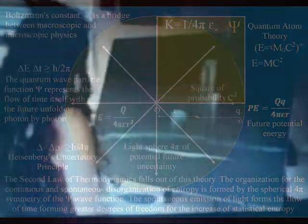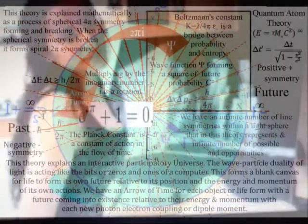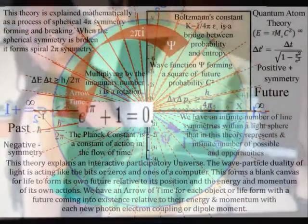The wave-particle duality of light is acting like the bits, or zeros and ones, of a computer. This forms a blank canvas for life to form its own future, relative to its position, and the energy and momentum of its own actions.